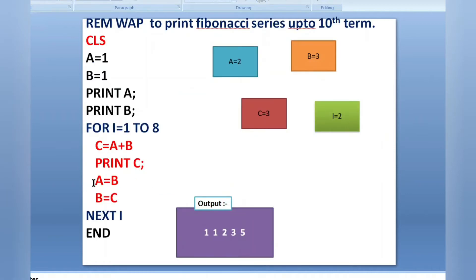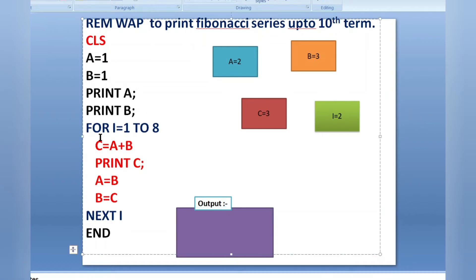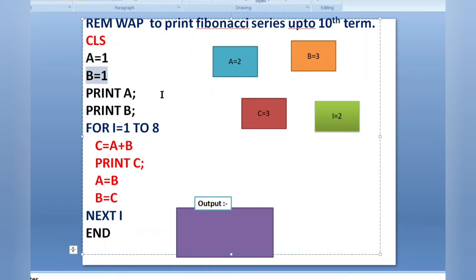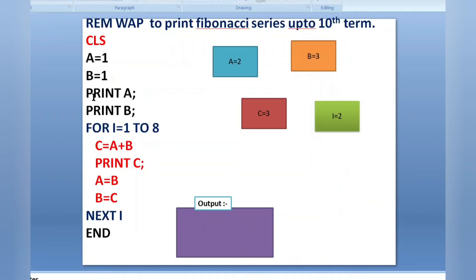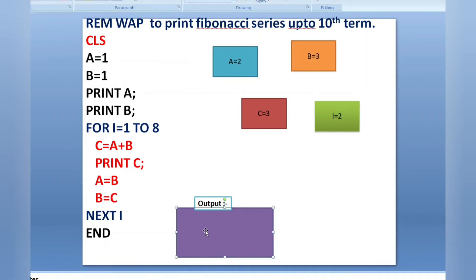I have written a program here and I will show you the dry run. The main logic is inside the for loop. Initially I have taken A equals 1 and B equals 1, and then I am printing those values — A and B — because in the Fibonacci series we need to print two initial numbers: 1 and 1.